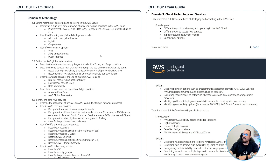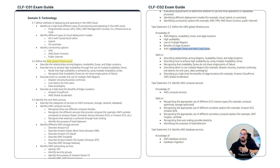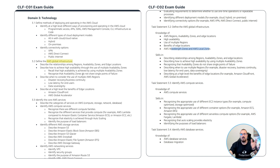Notice the 'define methods of deploying and operating in the cloud' — probably no real differences there. Then we've got global infrastructure. Task statement 3.2 also defines global infrastructure. We included local zones in our CLF-01 course already, but wavelength zones is an addition — that's where you deploy cellular technologies on AWS. This was not in the old CLF-01 exam, but if you took our course, it was already included.